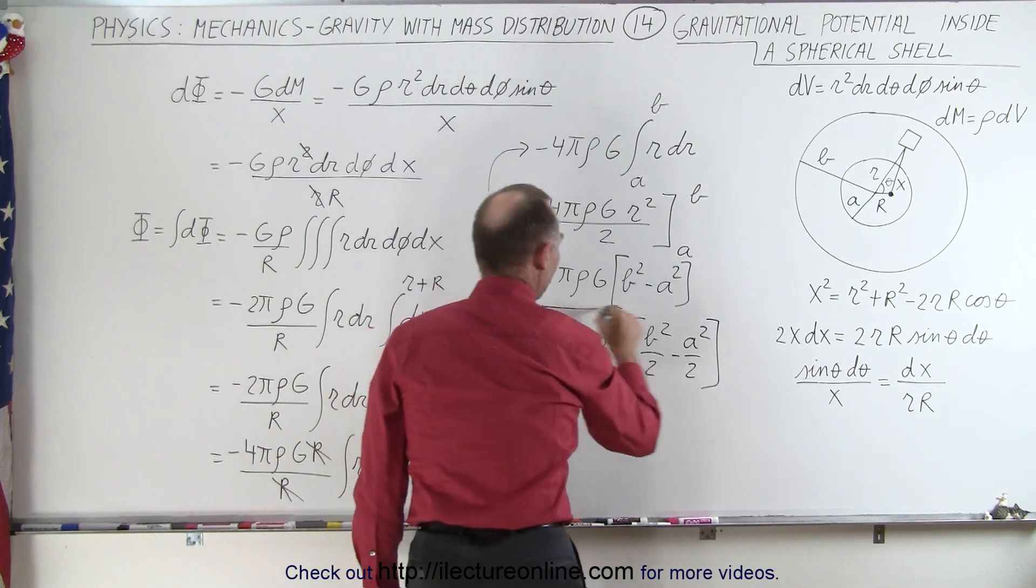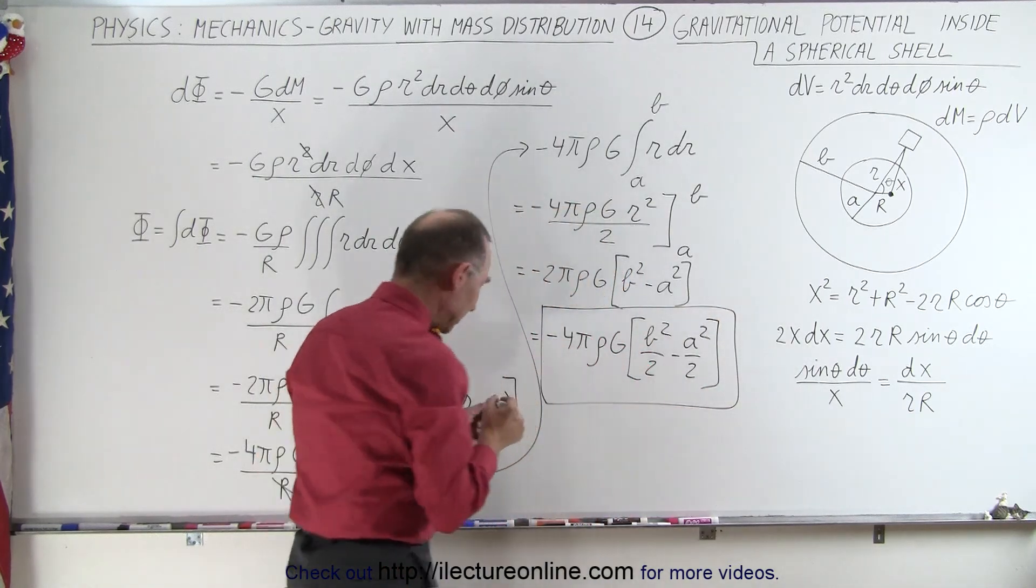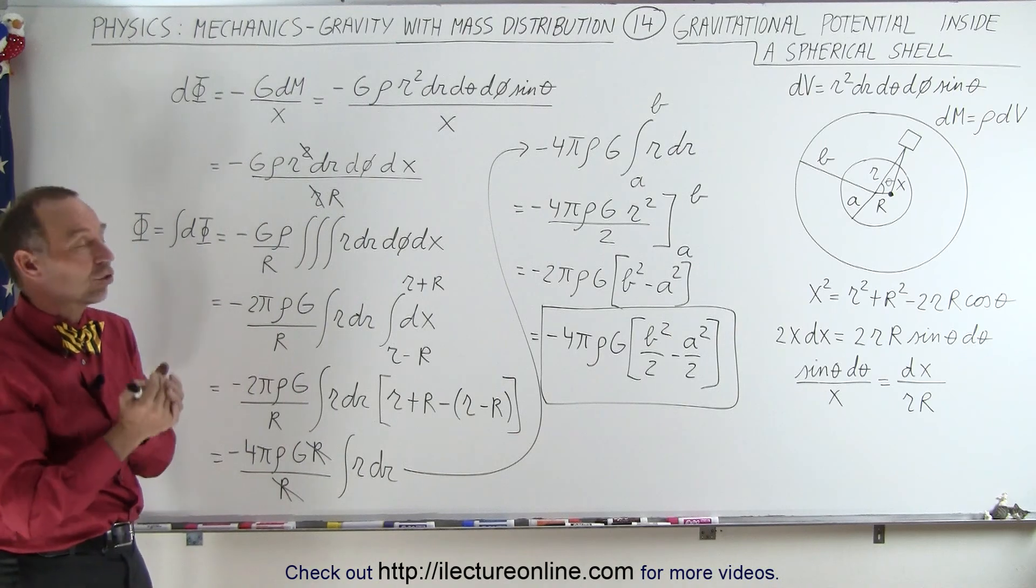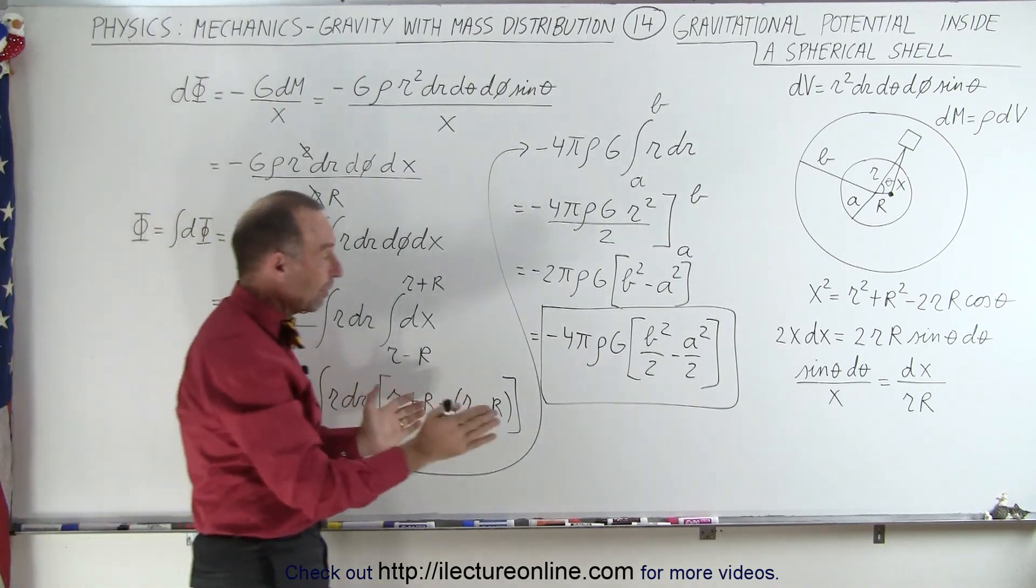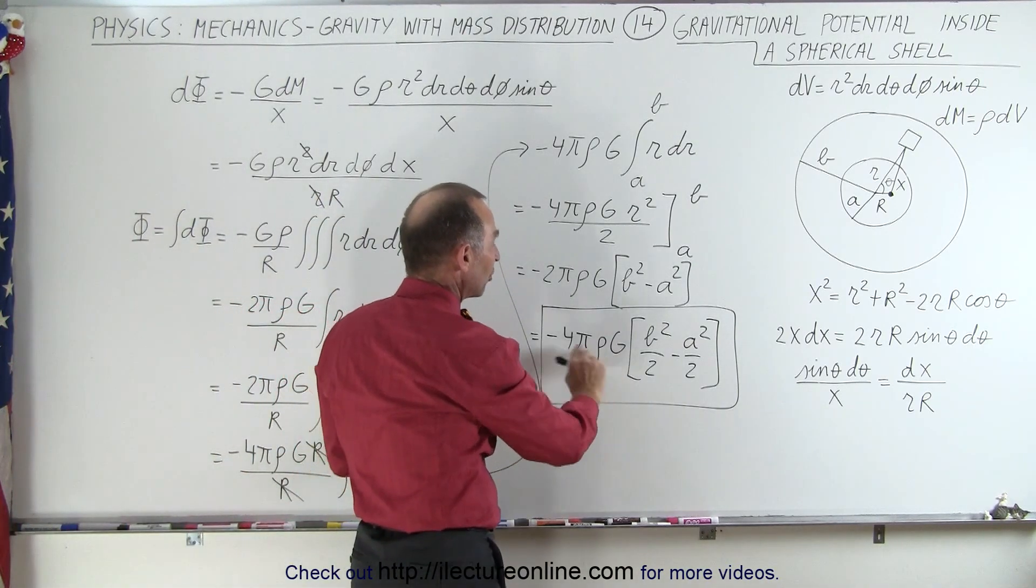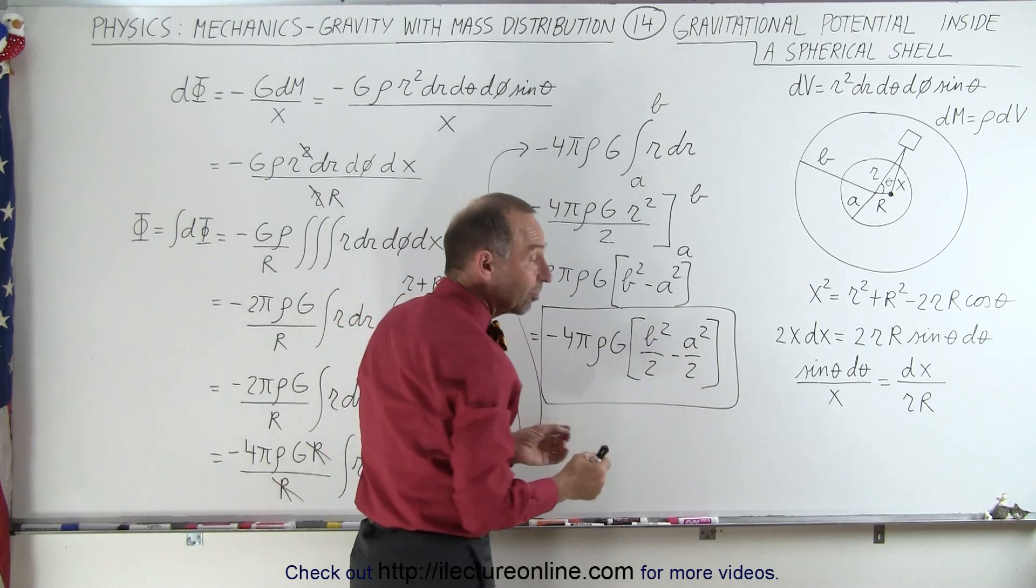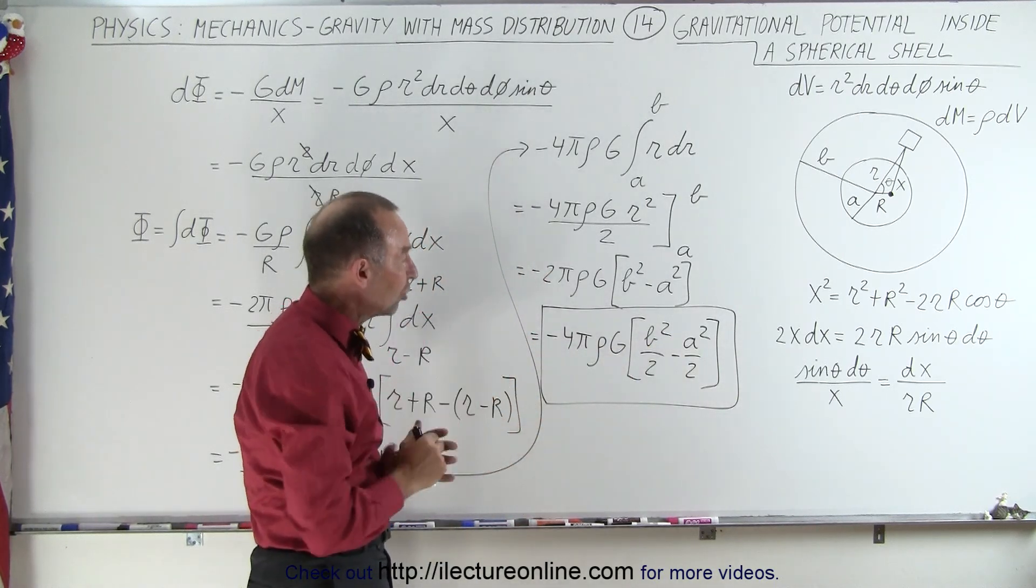Now let's take a look at our answer. This is now the gravitational potential inside a spherical shell. Notice there are no variables. Pi, rho, and g are all constants. B and a are constants. Those are simply the inner and outer radius of the shell.